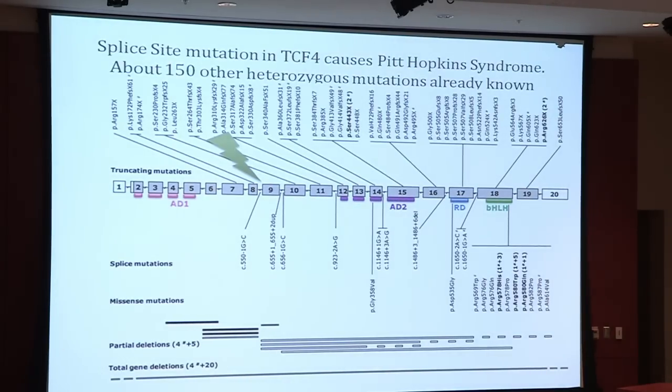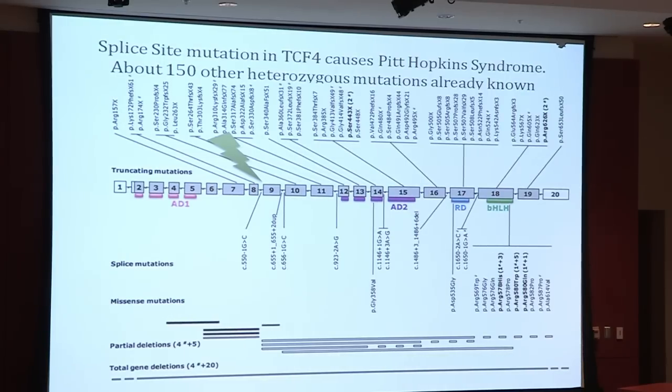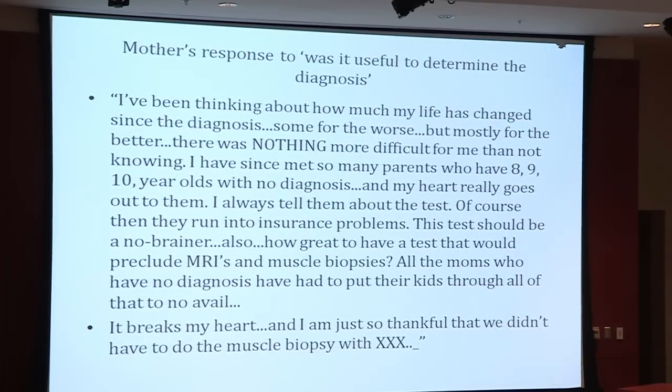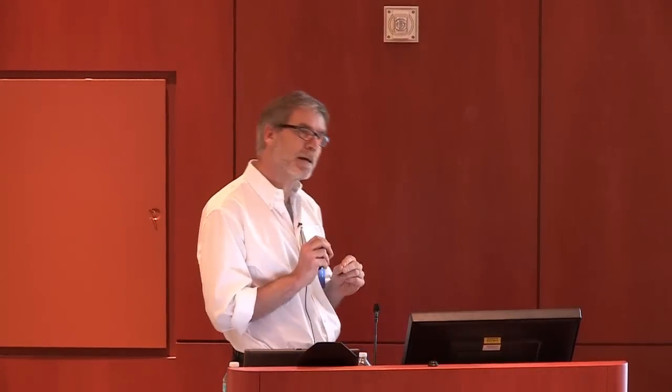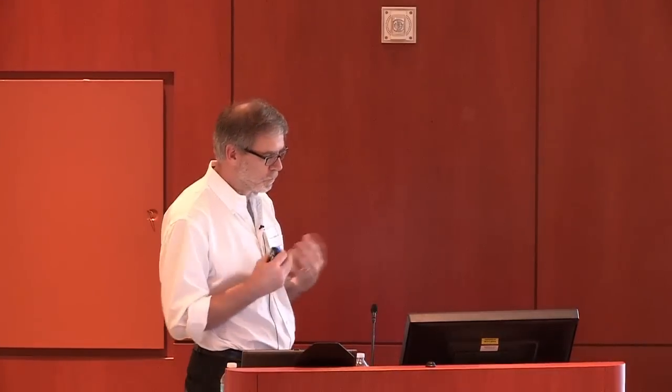Haploinsufficiency of TCF4 causes a disease called Pitt-Hopkins syndrome — a very severe neurodevelopmental disorder — which would predict that the child may never speak and may never walk. Even with that diagnosis, life changes for patients when you give them a genetic diagnosis; it's a before-and-after event, and that was true for this mom as well. She knew she had a child with a very serious disease but didn't know its name, didn't know the issues, didn't know what the predictive course would be, because nobody could give her that. After the initial shock, she was thankful the molecular diagnosis was made and she could move forward with a clear idea of how life would proceed.